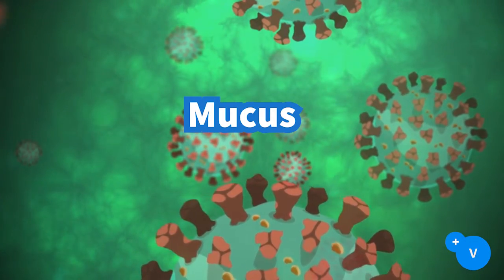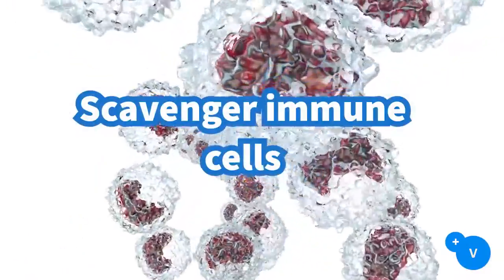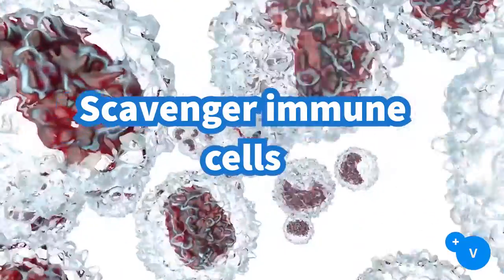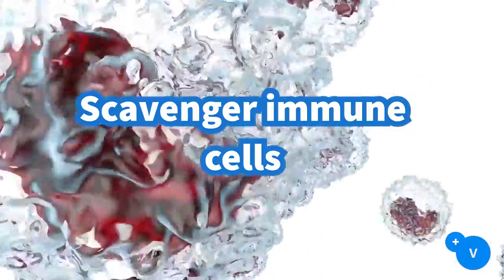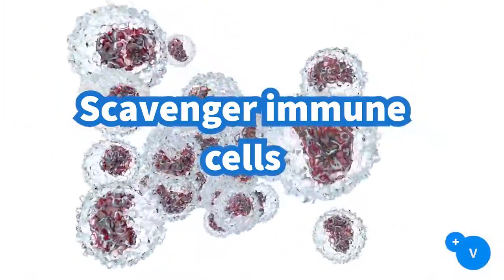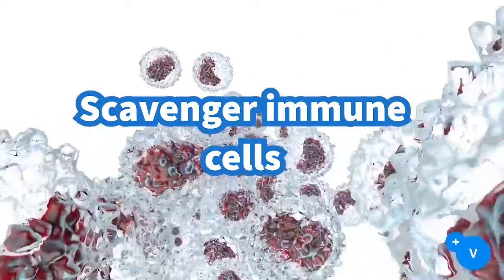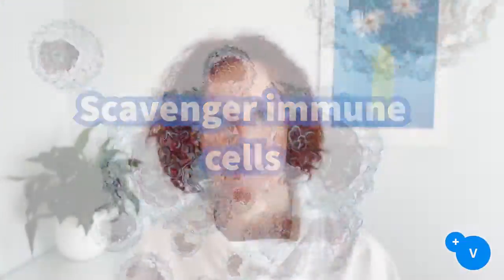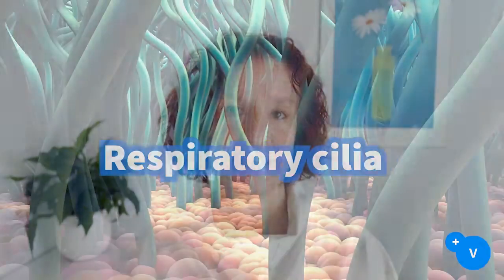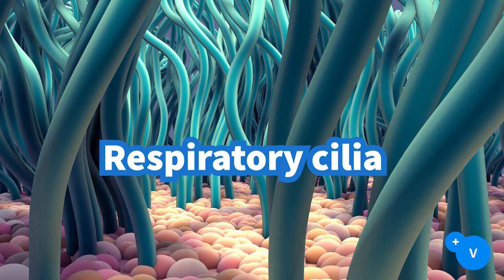The second defense mechanism is scavenger cells, which are part of the immune system and that actively look for foreign particles and pathogenic bacteria to destroy them. The third mechanism is the respiratory cilia.